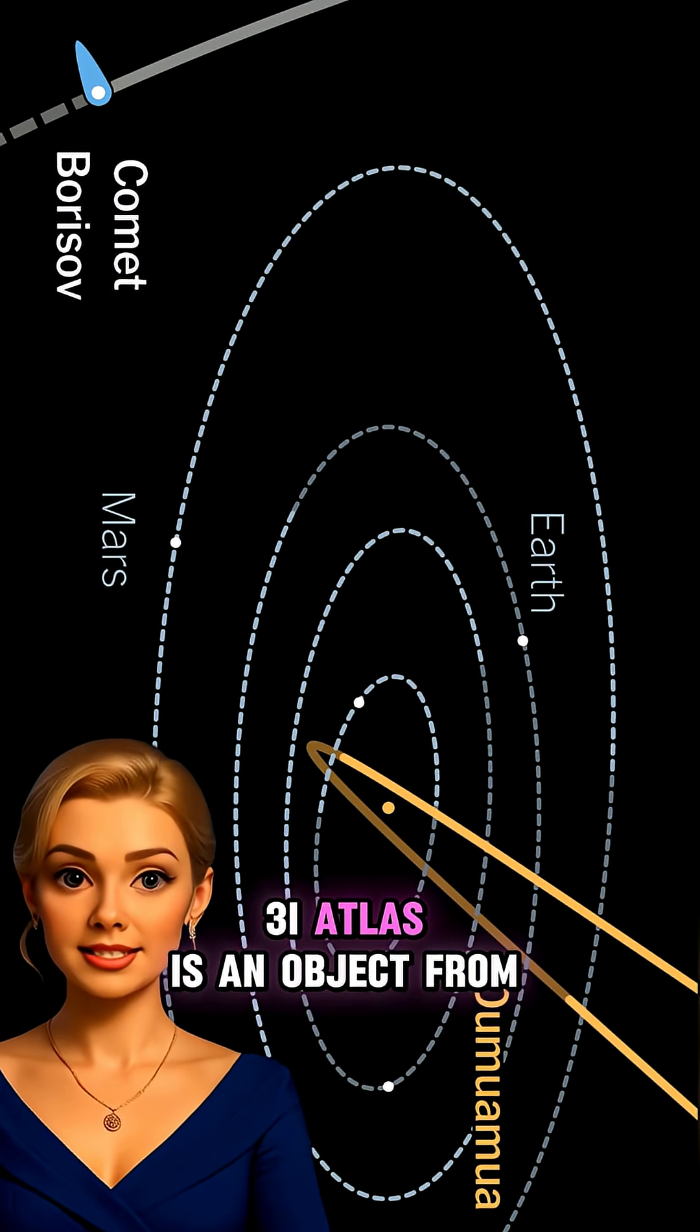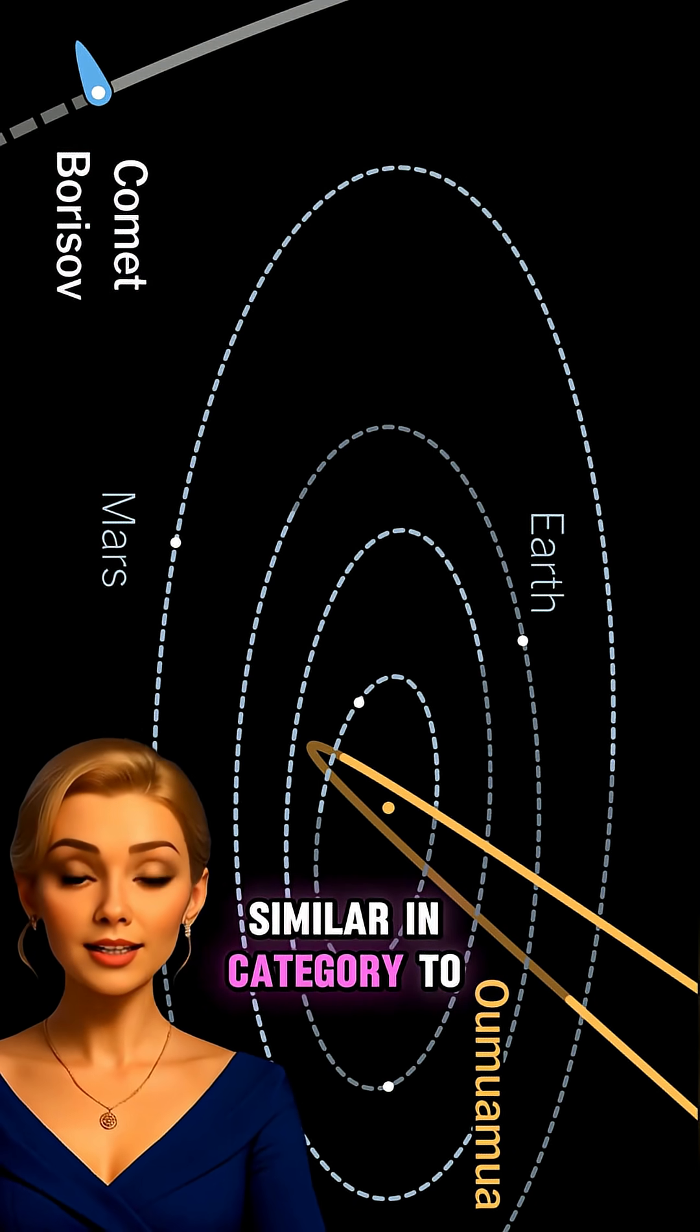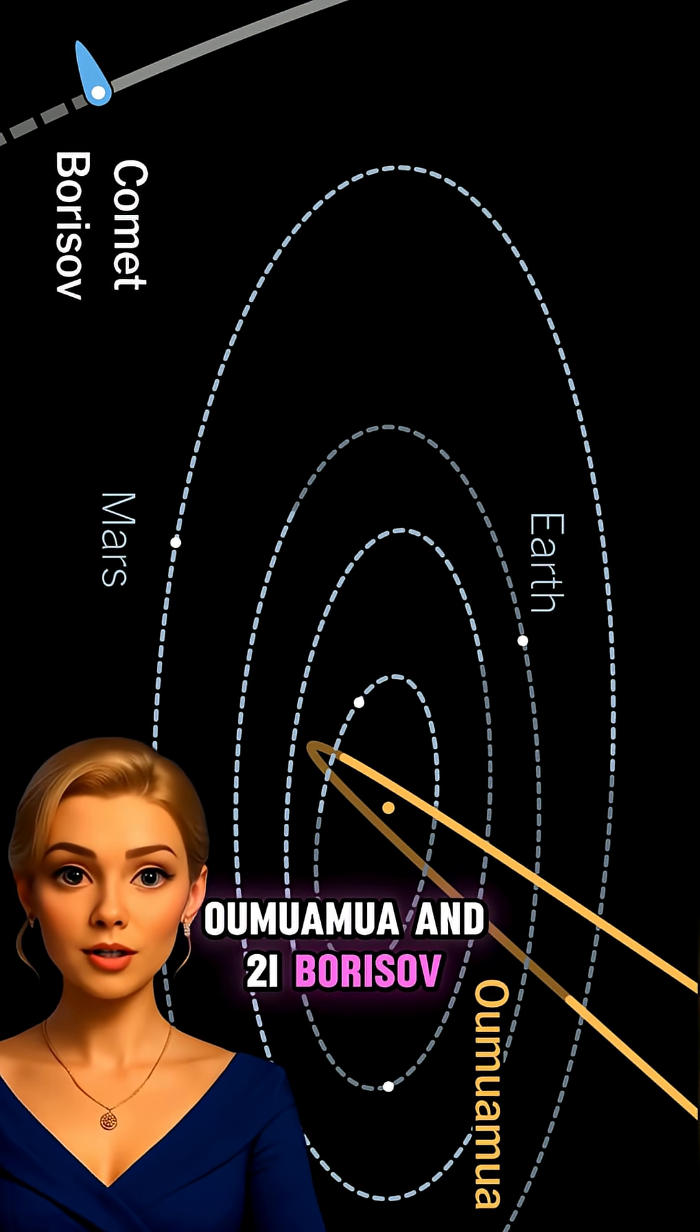Three-Eye Atlas is an object from outside our solar system, similar in category to Oumuamua and Two-Eye Borisov.